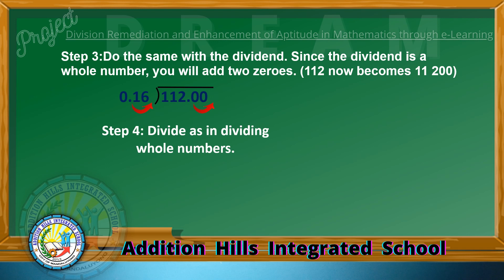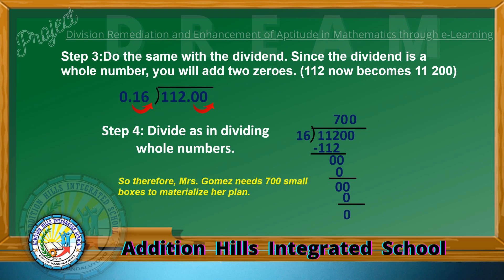Step 4: Divide as with whole numbers. We have 11,200 divided by 16. Since 16 is a two-digit number, get also two digits on the dividend. 11 divided by 16 cannot be done, so get three digits: 112 divided by 16 is equal to 7. Put 7 on top of 2. 7 times 16 is 112. Subtract: 0. Since the remaining digits are zeros, copy the two zeros onto the quotient. The quotient is 700. Therefore, Mrs. Gomez needs 700 small boxes to materialize her plan.